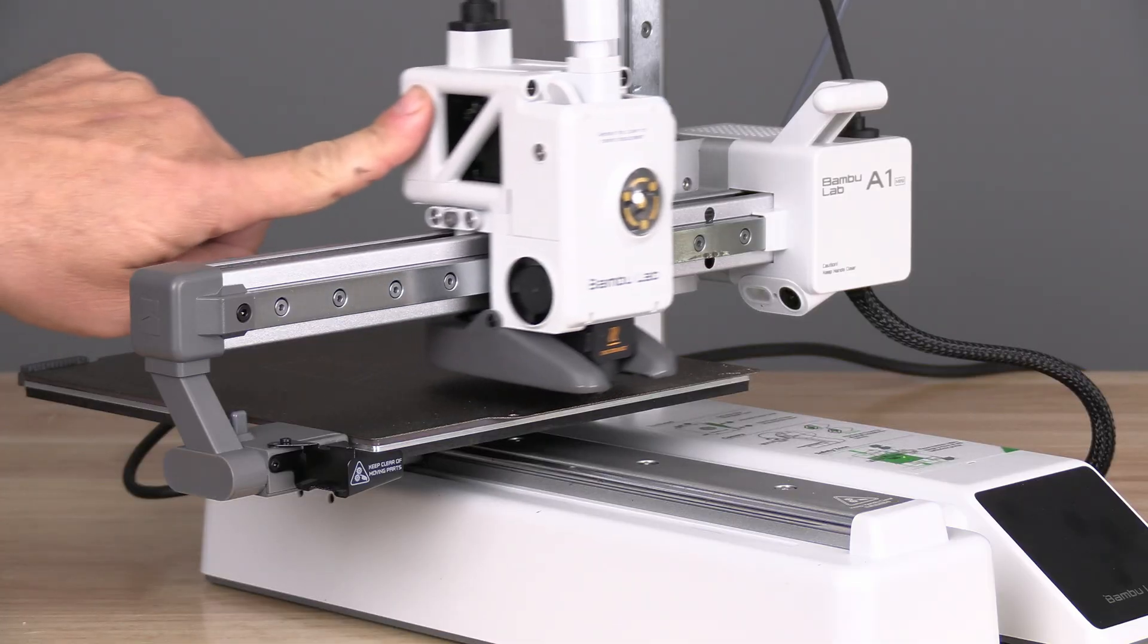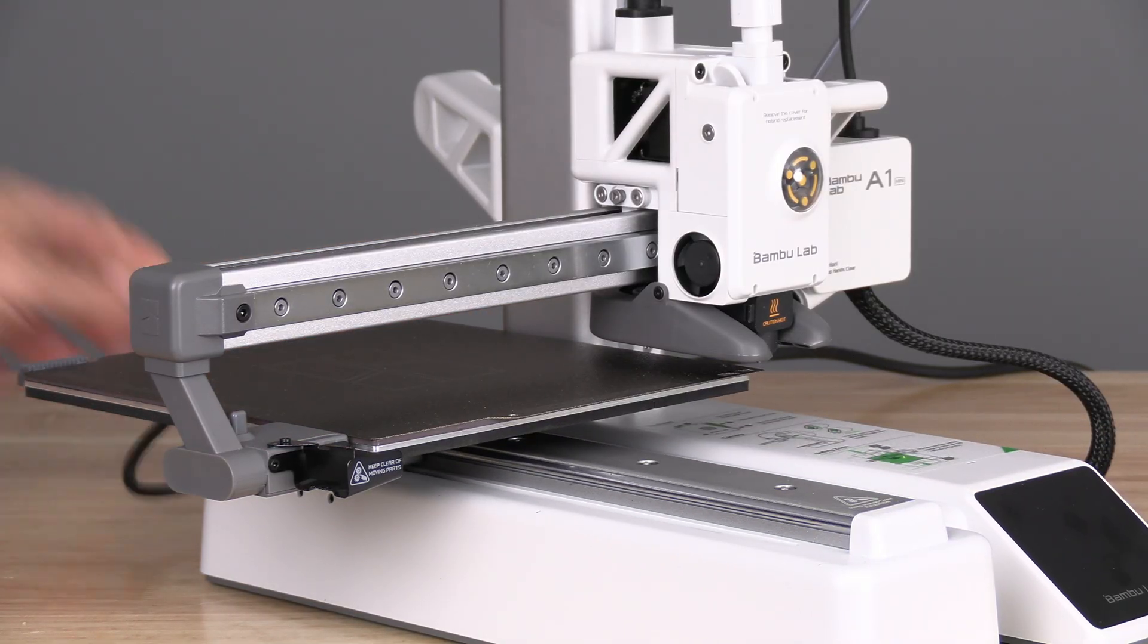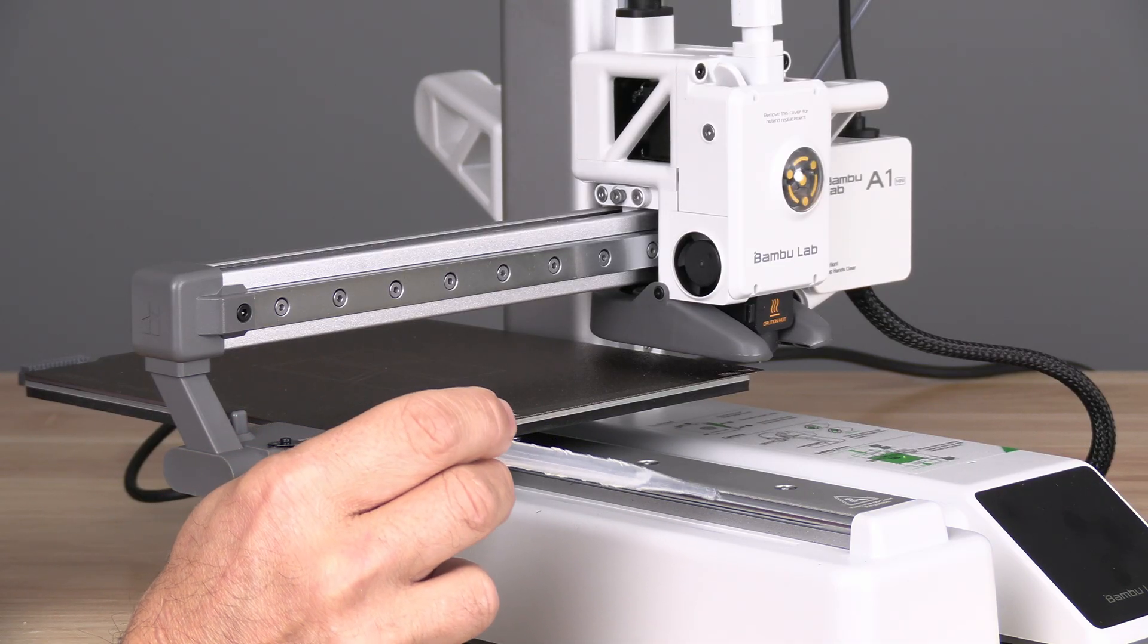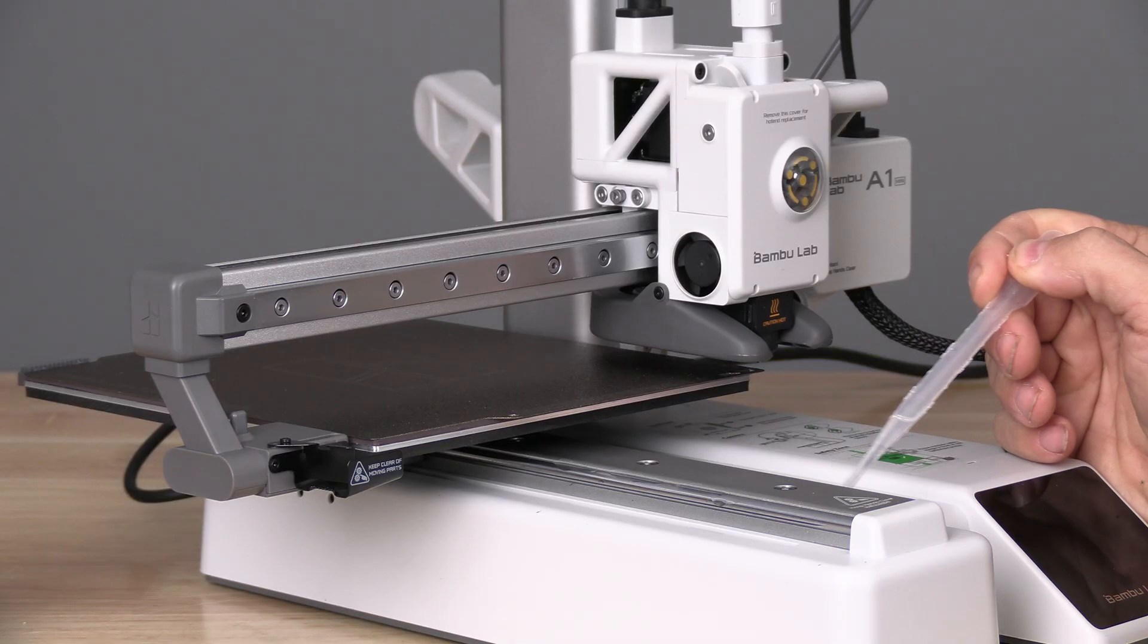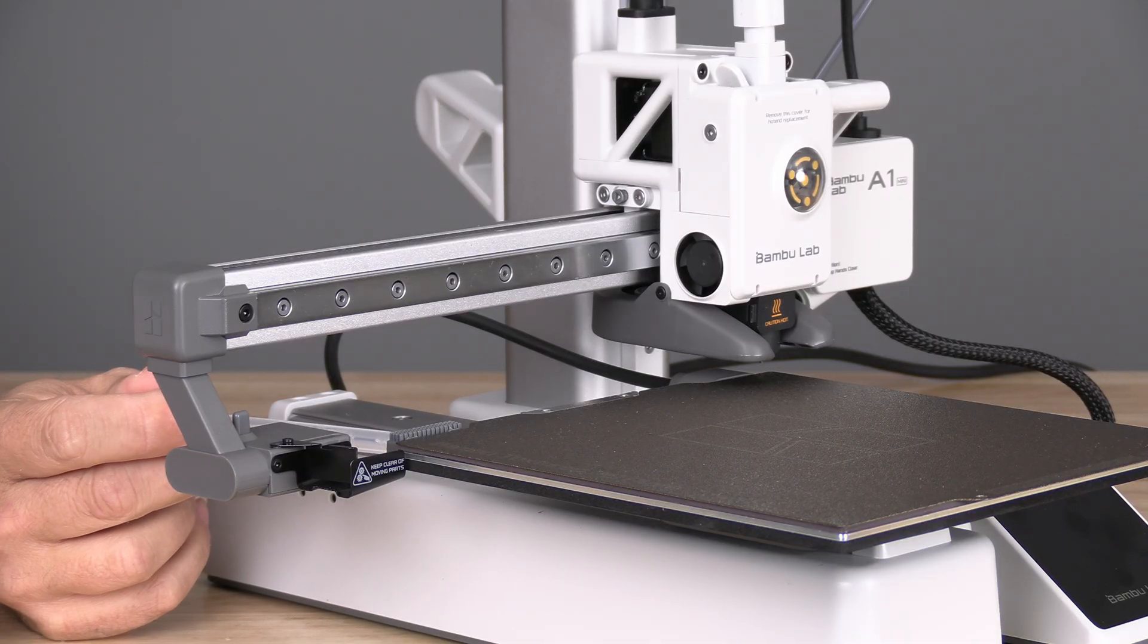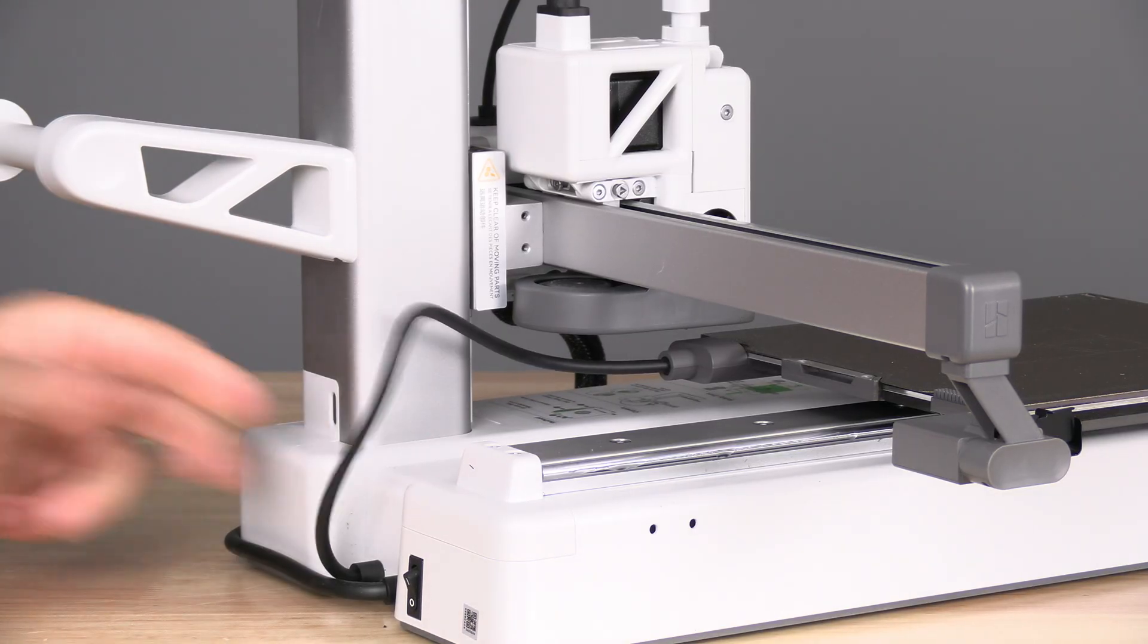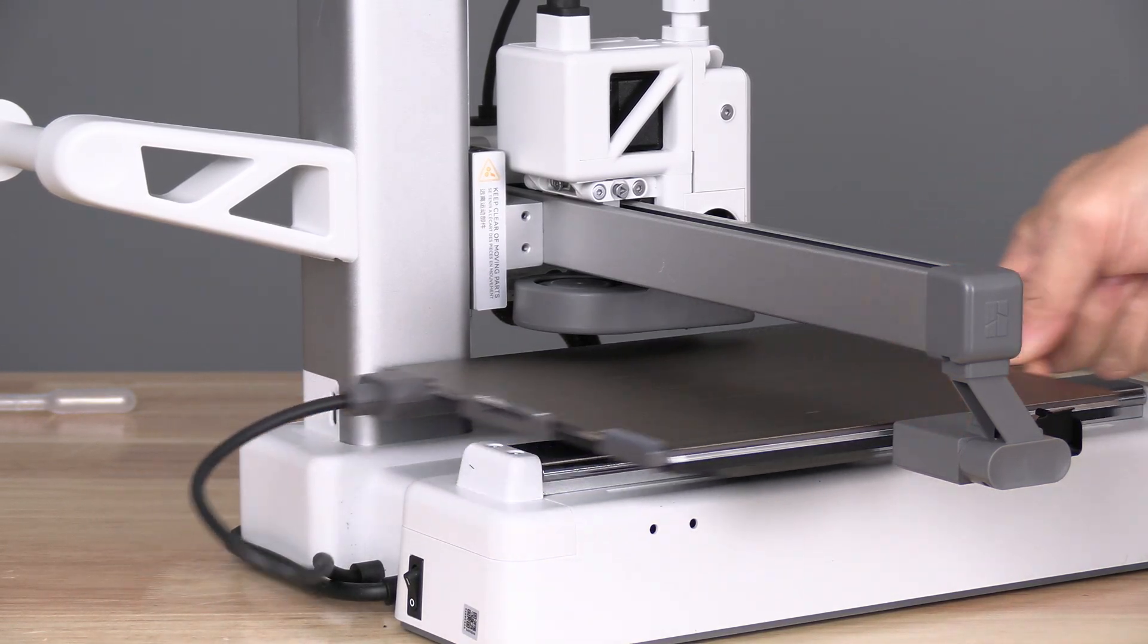Move your hotend all the way over and move your print bed all the way back. Using the oiling method of your choice, place a small bead of oil on this rail on both sides. Move the print bed up and do this on the remaining portion of the rail. Again, do this on both sides. Pinch your build plate and physically move the bed forward and backward.